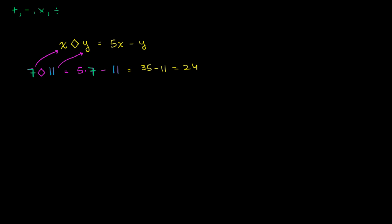So 7 diamond 11 is equal to 24. We can define other things. Let me define a star. A star b, let's say that's the same thing as a over a plus b.